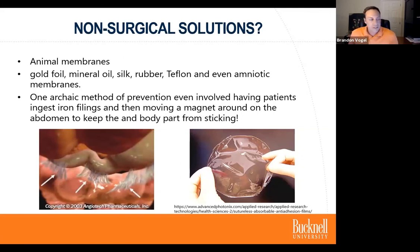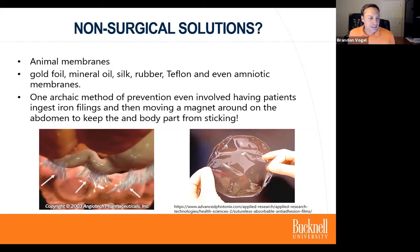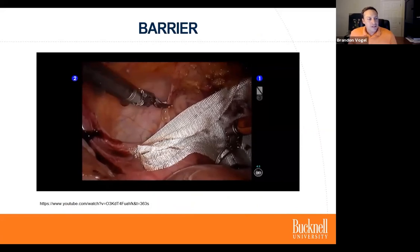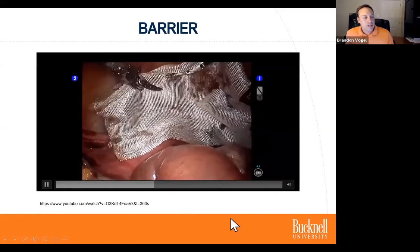What are some non-surgical solutions? Historically: animal membranes like catgut, gold foil, mineral oil, silk, rubber, Teflon, even amniotic membranes. One archaic method had the patient ingest iron filings, then a nurse would move a large magnet on the patient's body to keep organs moving. Some doctors, engineers, and material scientists came up with the idea of using the equivalent of Saran wrap — wrapping the organ — and if the Saran wrap is degradable, you don't have to worry about removing it. This degradable membrane goes away after 14 days.